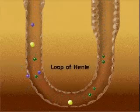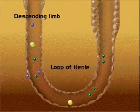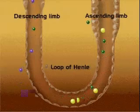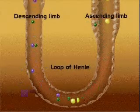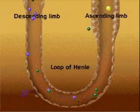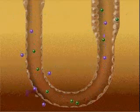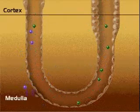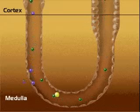The direction of flow in the descending limb of the loop is opposite from the direction of flow in the ascending limb. By flowing in opposite directions in such close proximity, a unique interaction occurs. The loop of Henle dips from the cortex of the kidney into the medulla and is surrounded by the medullary interstitial fluid.